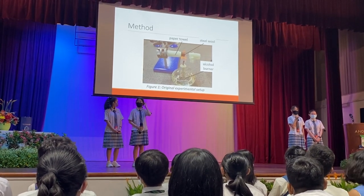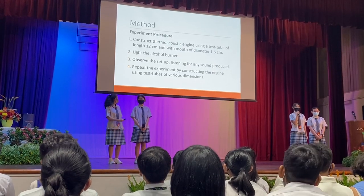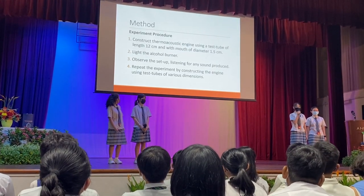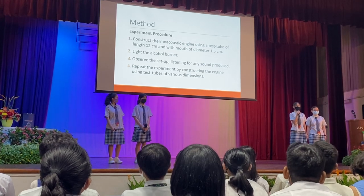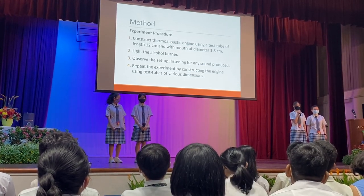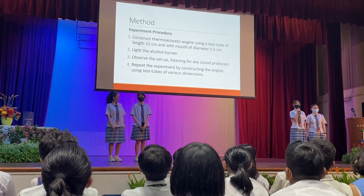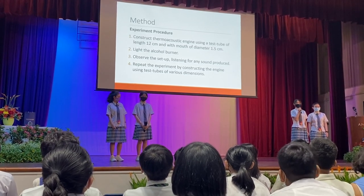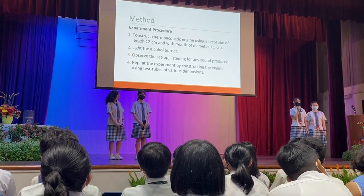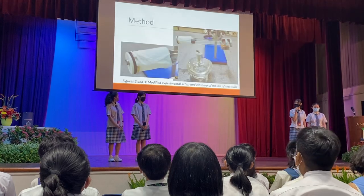If all goes well, a sound will be produced. In order for this setup to produce electricity, some modifications have to be made. The steel wool has to be placed closer to the mouth of the test tube, and the rubber membrane from the balloon has to be placed around the mouth of the test tube. Lastly, a magnet has to be placed in the center of the rubber membrane.